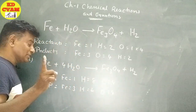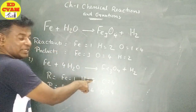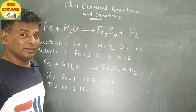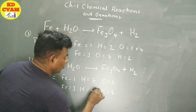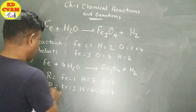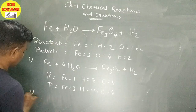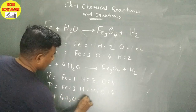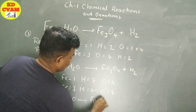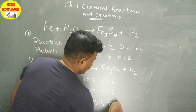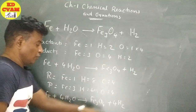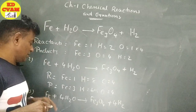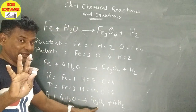Now 4 is balanced. We will balance hydrogen next. H is 8 on the left side in 4H2O. Here H is 8, so we multiply by 4. Step 2: Fe plus 4H2O gives Fe3O4 plus 4H2. Hydrogen 4 times 2 is 8, balanced. So we have Fe plus 4H2O gives Fe3O4 plus 4H2.